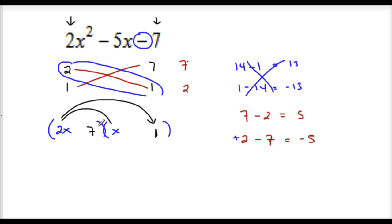So 2 times 1. Now I just got to figure out my signs. I want the 2 to be positive, so this will be positive 2. I want 7 to be negative. This will be negative 7. We have opposite signs because this here is negative. Check your work. 2x times x, 2x squared, plus 2x times 1, 2x, negative 7 times x, negative 7x, negative 7 times 1, negative 7. Combine like terms. 2x squared, minus 5x, minus 7.